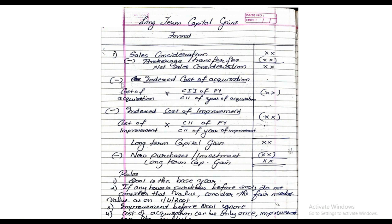Now from net sales consideration, you have to subtract something called indexed cost of acquisition. It means we need to find the cost price of the property if it would be purchased in the previous year. The formula is: cost of acquisition multiplied by CII of the previous year, divided by CII of the year of acquisition. This is a very simple formula, and practically it will carry a bit more weightage, but you will understand it very easily.